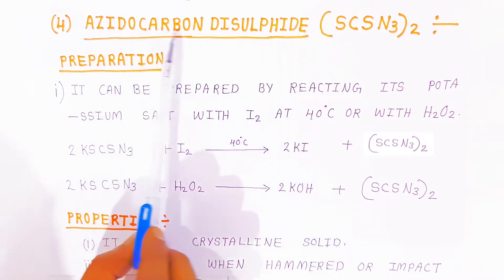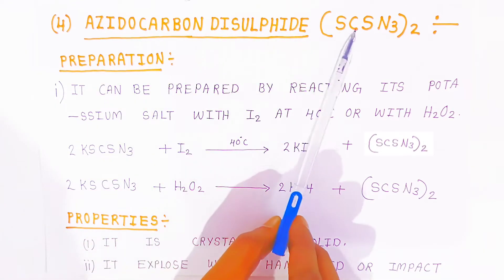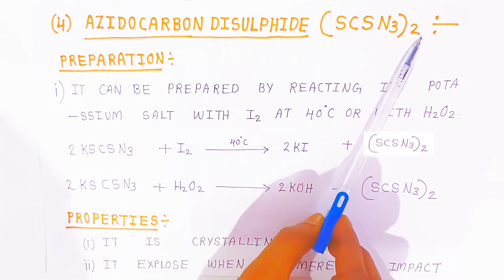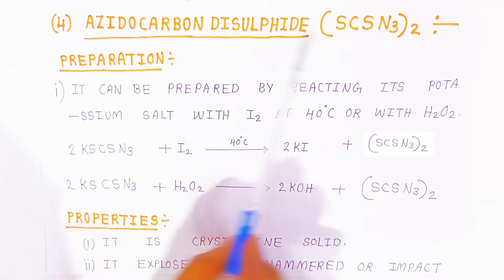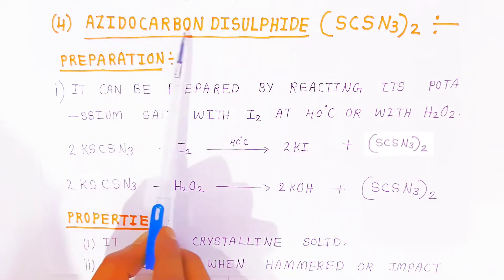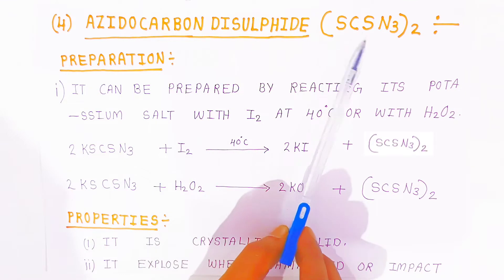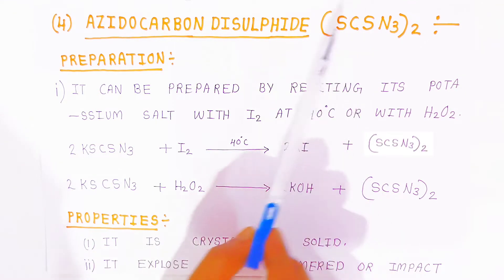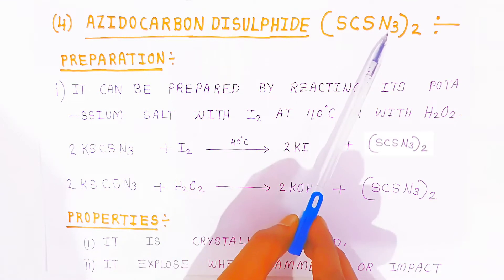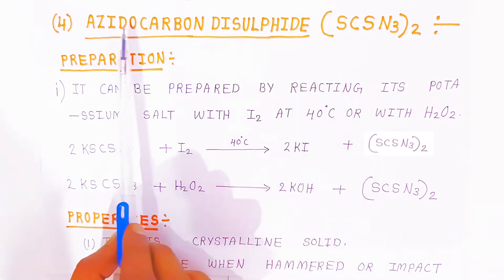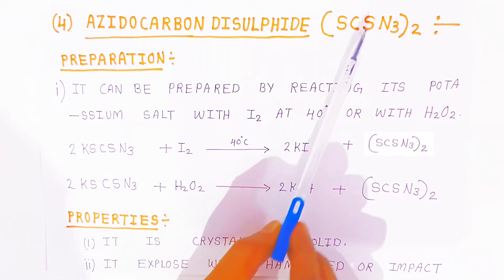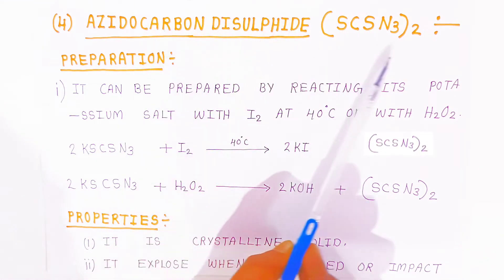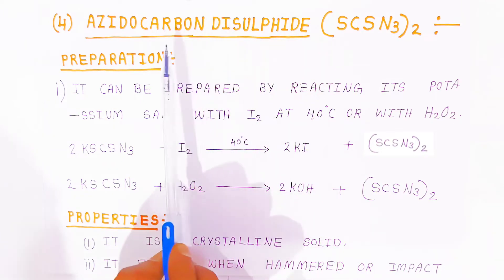Azido carbon disulfide is written as N₃ twice — (N₃)₂CS₂. It is called 'azido' because of the three nitrogens; we call this the azide group. So this is azido carbon disulfide.